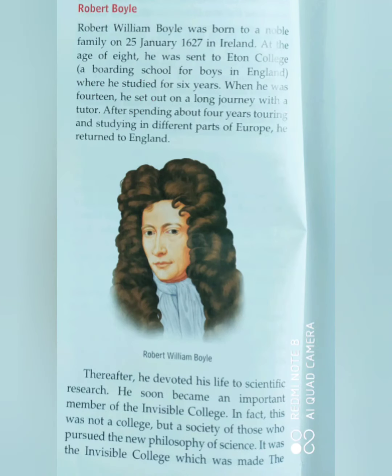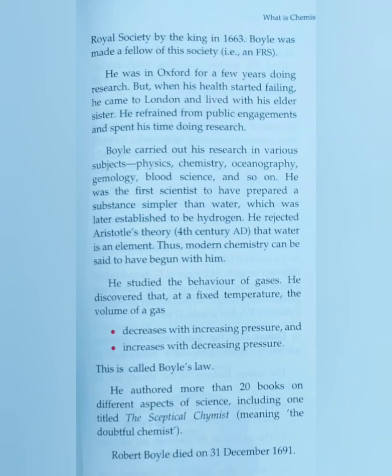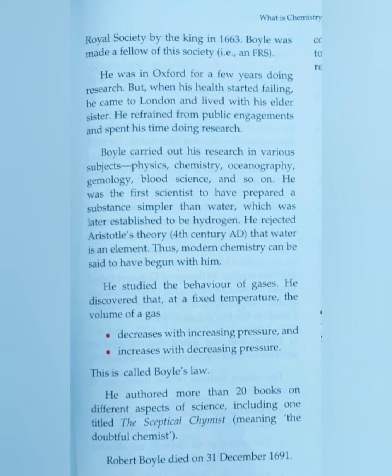Robert Boyle was born to a noble family on 25th January 1627 in Ireland. He was the first scientist to prepare a substance simpler than water, which was later established to be hydrogen. He rejected Aristotle's theory that water is an element, and from then modern chemistry evolved. He also studied the behavior of gases and gave Boyle's Law, and he wrote more than 20 books. He researched subjects like physics, chemistry, oceanography, and gemology. His famous book The Skeptical Chemist — meaning The Doubtful Chemist — is a very famous one. Robert Boyle died on 31st December 1691.